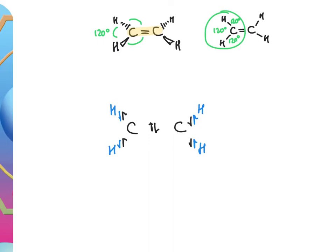A single covalent bond is a shared pair of electrons. Between each carbon and hydrogen, we have one electron from carbon and one from hydrogen. The carbon–carbon bond is a double bond, but it starts as a single bond — one electron from each carbon. Focusing on the single bonds in ethene, each carbon uses up three electrons, and we know the second energy level has four electrons, so the remaining electron on each carbon is found in the p-orbital.